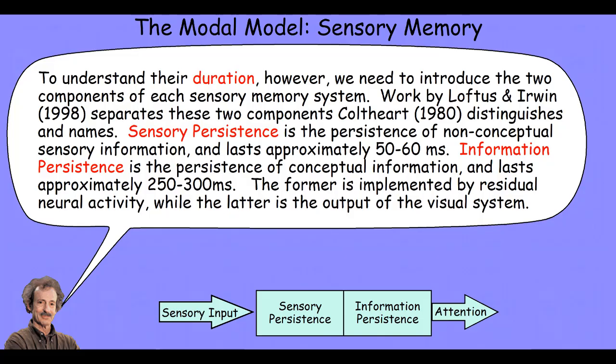In order to understand their duration, we have to introduce two components of each sensory memory system. Koholt distinguished and named them in 1980, but it wasn't until 1998 when work by Loftus and Ehrman separated out these two components experimentally. Sensory persistence is the persistence of non-conceptual sensory information, and it lasts approximately 50 to 60 milliseconds. Information persistence is the persistence of conceptual information, and it lasts approximately 250 to 300 milliseconds. The former is implemented by residual neural activity, while the latter is the output of the visual system.